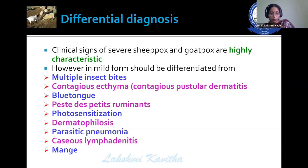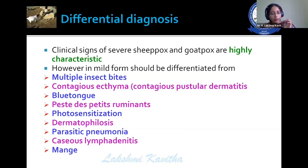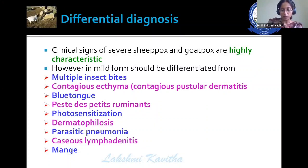Whereas sheep pox and goat pox mainly occur in March and April, helping differentiate them from dermatophilosis. Additional differentials include parasitic pneumonia and caseous lymphadenitis, where lymph nodes are enlarged and very hard to touch. Mange can be differentiated by examining skin scrapings in 10% potassium hydroxide.